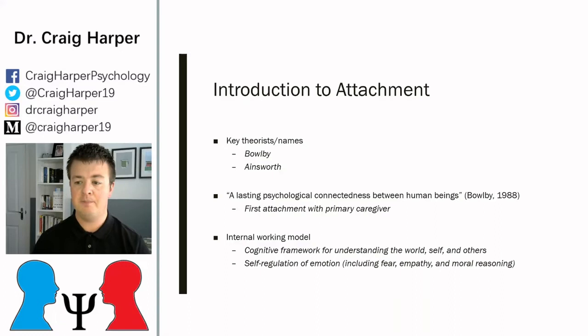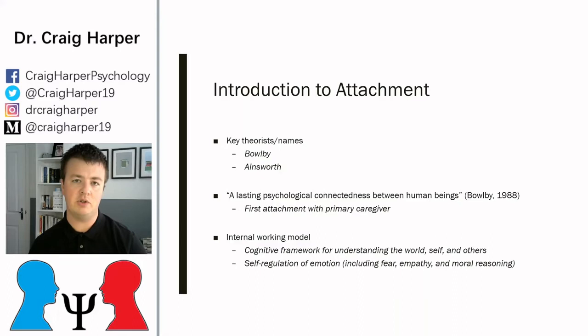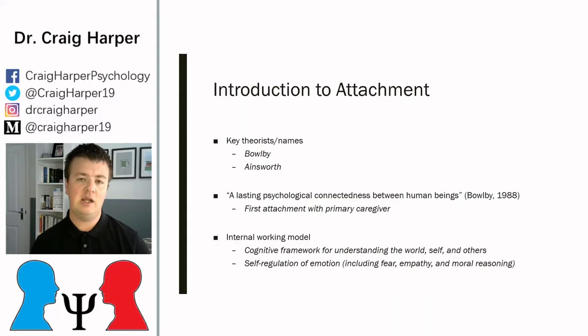The internal working model is different for each person but essentially it's a cognitive framework for understanding yourself, other people, and the social world within which you and others operate. It helps you to regulate your emotion and regulate how you interpersonally interact with other people. Depending on your internal working model, your view of the world impacts how you interpret information, process emotion, and read other people. There's a real key link here to social cognitive theory, which we'll look at in a future video.